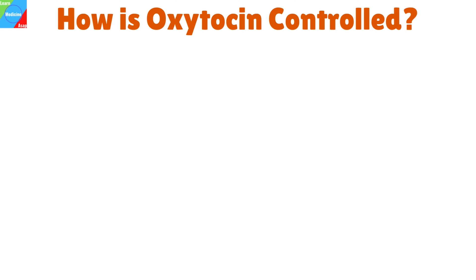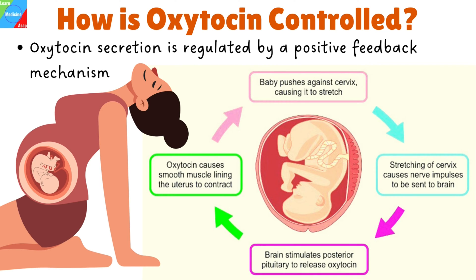How is oxytocin controlled? Oxytocin production and secretion is regulated by a positive feedback mechanism. This means that a release of the hormone causes an action that stimulates more of its own release. For instance, oxytocin is released when the uterus begins to contract during childbirth. More contractions and the release of more oxytocin are induced as a result, and contractions become stronger and more frequent. The release of the hormone is stopped once the baby is delivered.